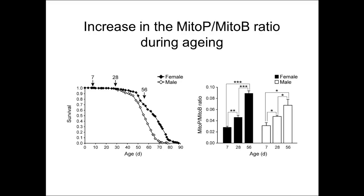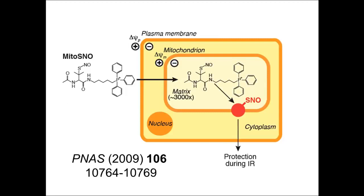In addition to using these targeting procedures to measure ROS levels in mitochondria, we can also target molecules with therapeutic potential to mitochondria to actually decrease ROS production. One example is MitoSNO — it uses the same targeting moiety attached to a nitric oxide-containing molecule that gets sucked into mitochondria. Once inside, it can transfer the nitric oxide onto protein thiols, which is called protein S-nitrosylation. There was strong evidence that increasing S-nitrosylation of mitochondrial proteins during or prior to a heart attack would decrease the amount of damage.